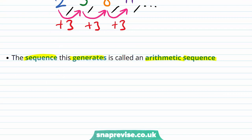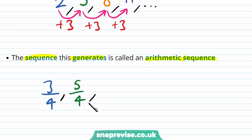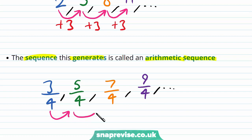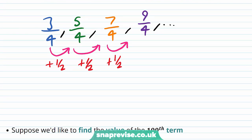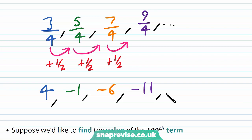Let's say instead we had a first term of 3 quarters, and then our next term was 5 over 4, then 7 over 4, and our next term was 9 over 4, and so on. In this case we are adding the same constant number which is 1 half. Or we could have as our first term 4, and then minus 1, then minus 6, then minus 11, and so on. In this case we will be subtracting each time, and the number that we are subtracting will be 5.